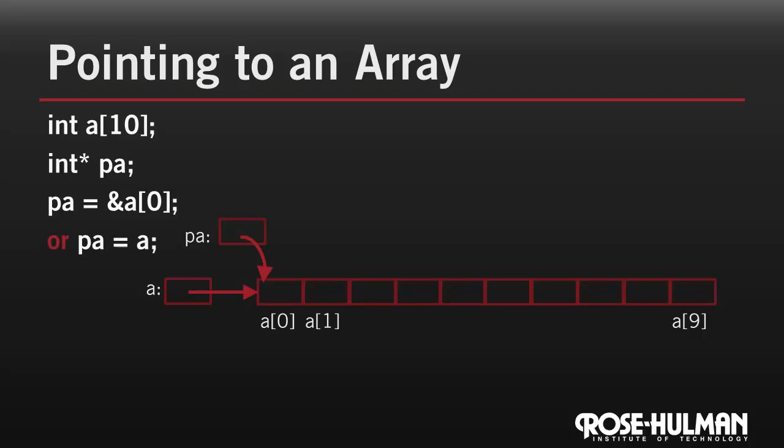The pointer now gives us another way to access the array's data. Remember that if you dereference a pointer, you get what it points to. So star pa is just element a sub 0, the data that's stored there.